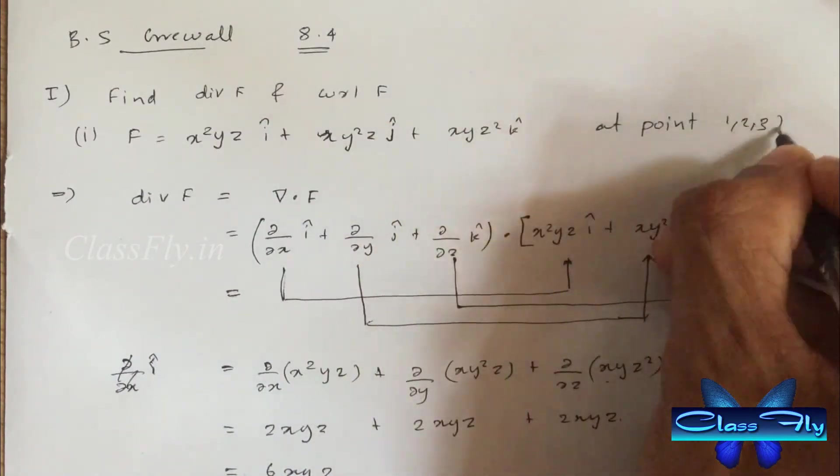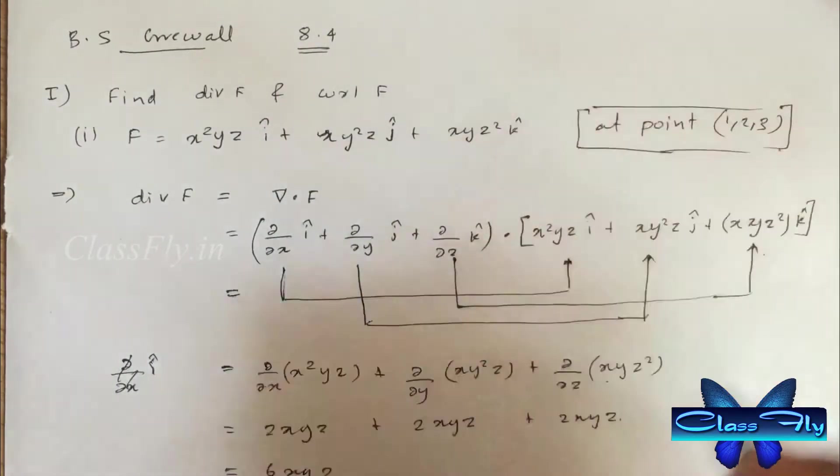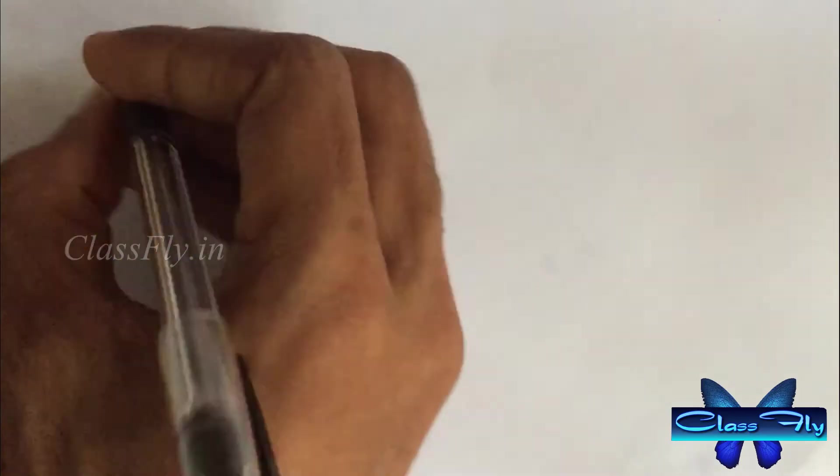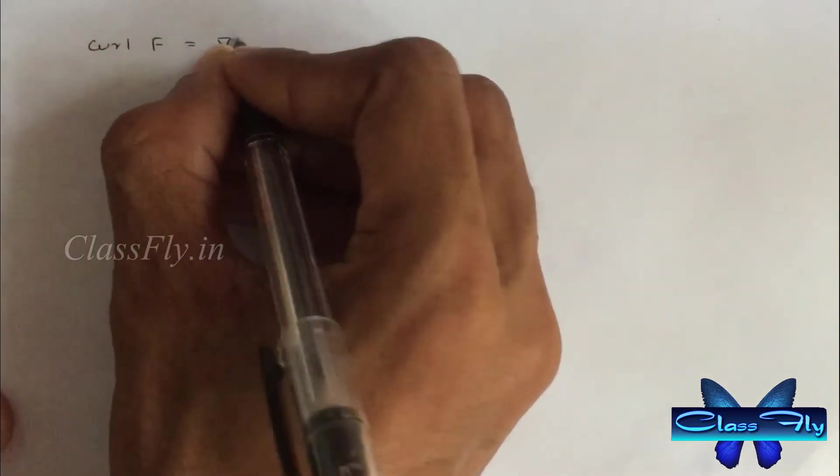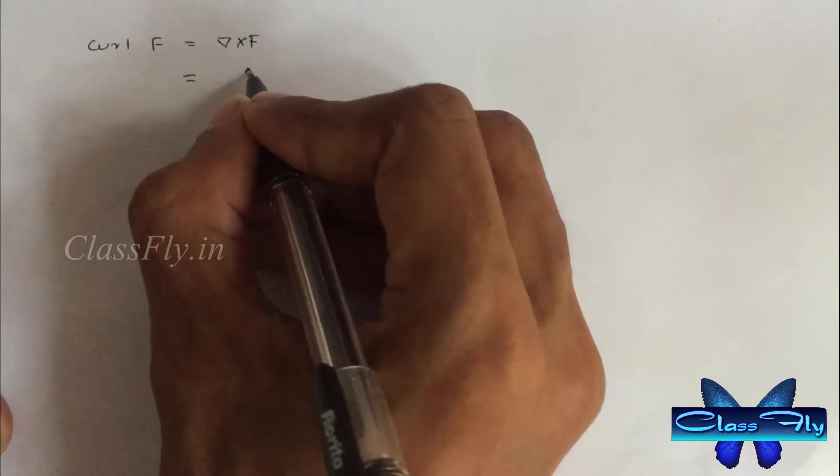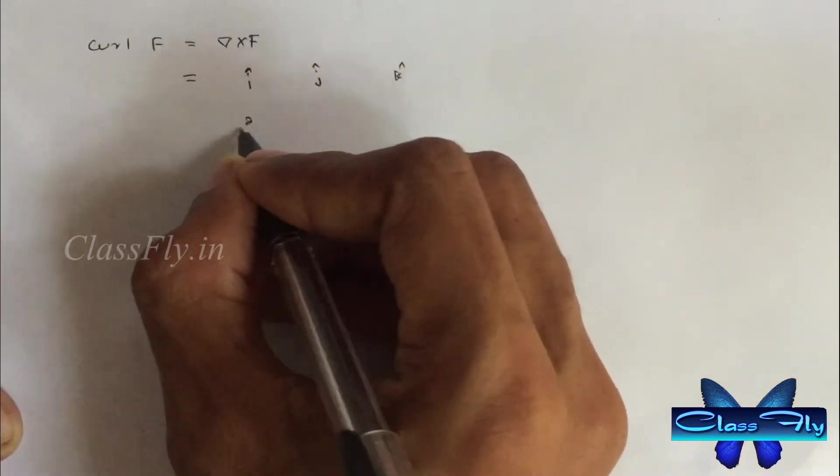Now substitute the point (1, 2, 3) and the divergence is 36. Now we have to determine curl of F that is del cross F. For that we have to solve the determinant.